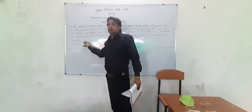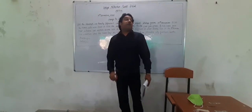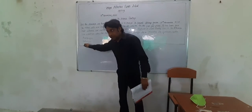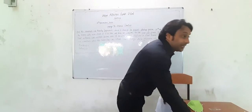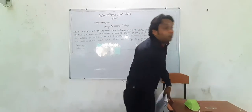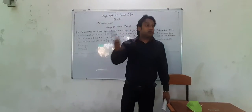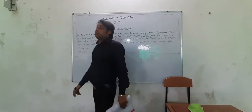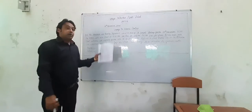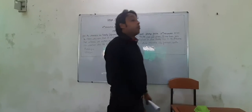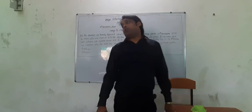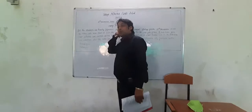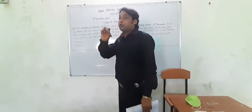At the end, write the designation — Principal. If you are a head boy or head girl, you can put your name there. If a name was given in the question, use that name. Most importantly, you must draw a box around the entire notice. Without a box, your notice is null and void.